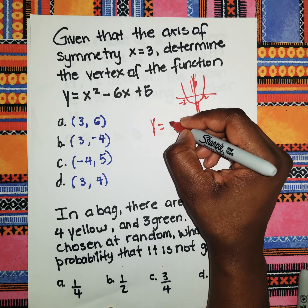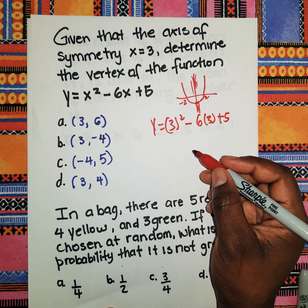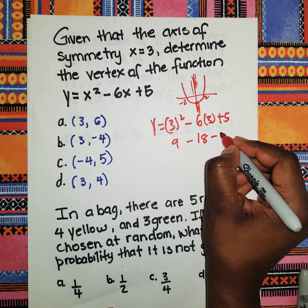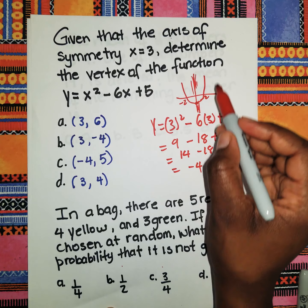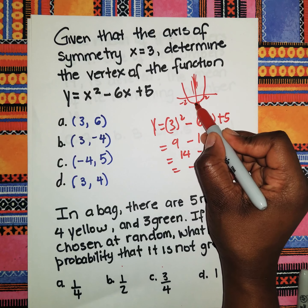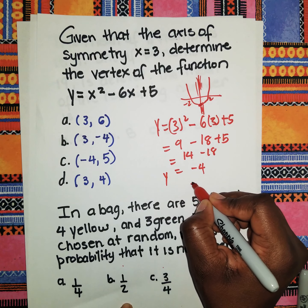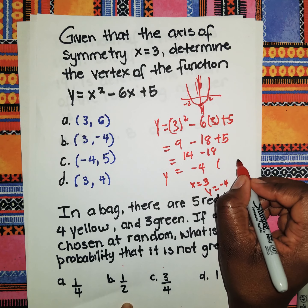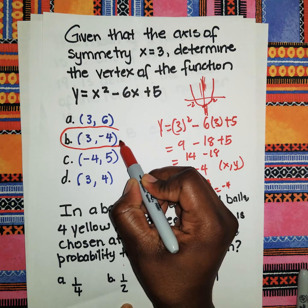Substituting x = 3: y = (3)² − 6(3) + 5 = 9 − 18 + 5 = −4. So the vertex — the minimum turning point — is at x = 3, y = −4. Since coordinates are written (x, y), the vertex is (3, −4).